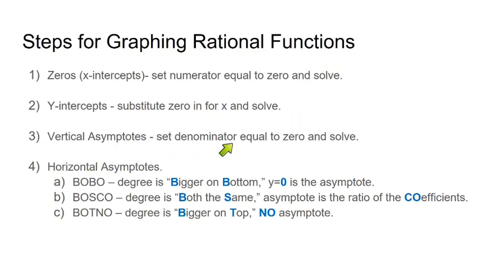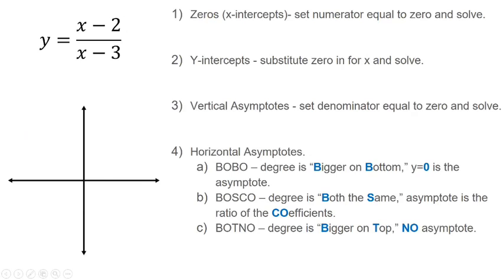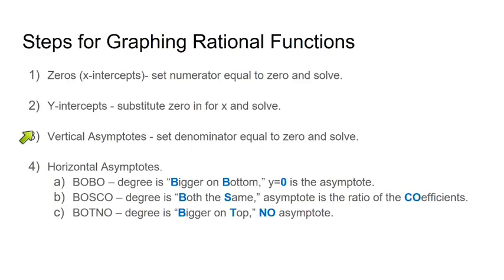To find our vertical asymptotes, we're going to set the denominator equal to zero and solve. There's a few little caveats with this when we start talking about holes of rational functions, but we'll get there later.